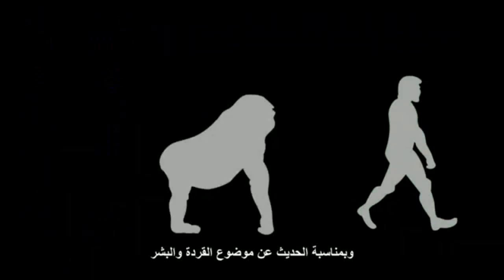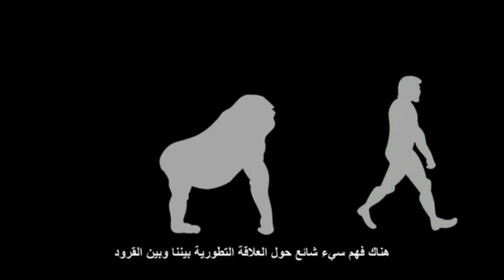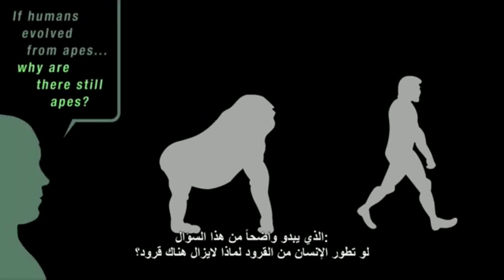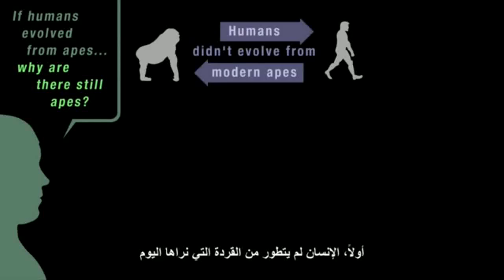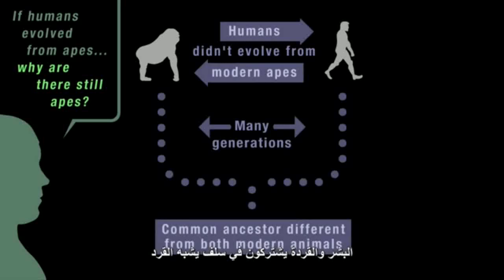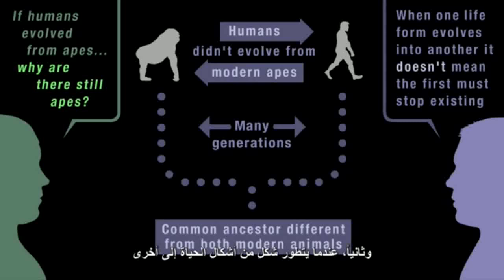While we're on the subject of apes and humans, there's a common misunderstanding about our evolutionary relationship with apes, revealed by the question: "If humans evolved from apes, why are there still apes?" Firstly, humans didn't evolve from the apes we see today. Humans and modern apes share a common ape-like ancestor different from both modern animals. But secondly, when one life form evolves into another, that doesn't mean the first life form has to stop existing.